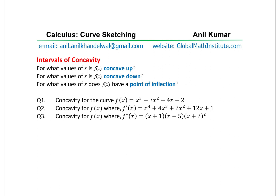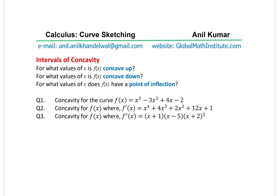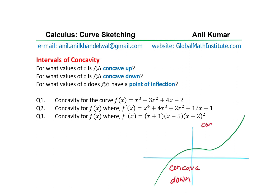Let's talk about concavity. If there is a graph, we have a portion which is called concave down, and then a portion which is called concave up. The point where the concavity changes is called the point of inflection.